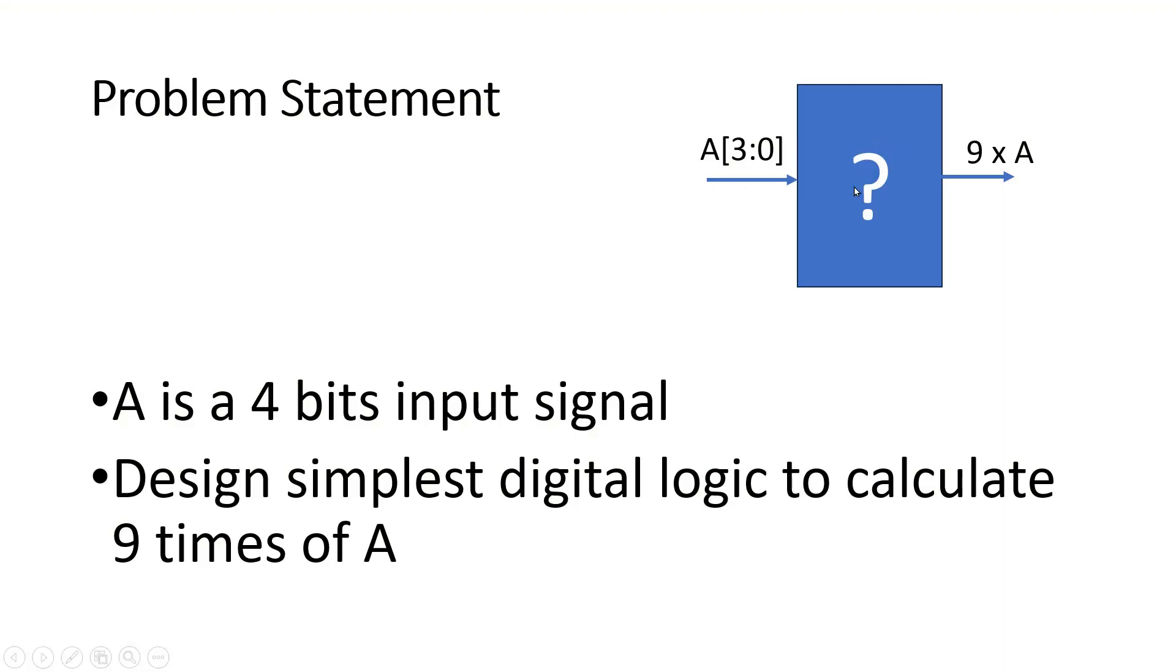The problem statement is very simple. Here we have to design this unknown combinational block. Input is vector A of four bits long, output is 9×A. A is the four bits input signal. We have to design the simplest digital logic to calculate nine times of A. That was the condition - we have to design the simplest digital logic.